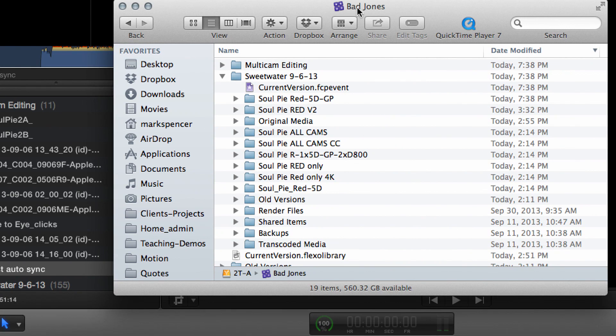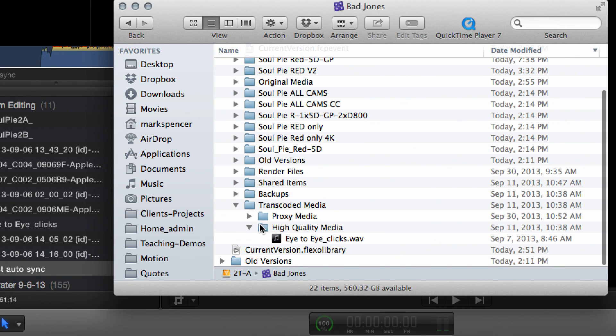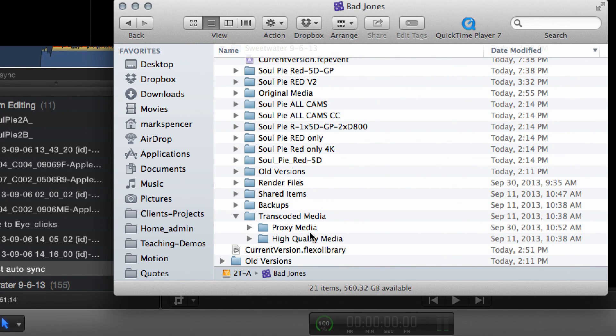So if I open the Bad Jones library, we can see in here there's a transcoded media folder, and there's proxy media, and there's high-quality media. In the 10.1 training, you had them just drag that high-quality media into the trash, didn't you?